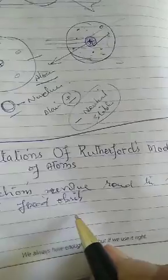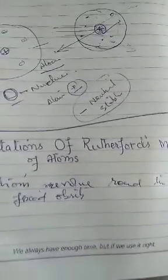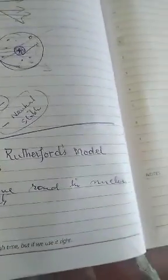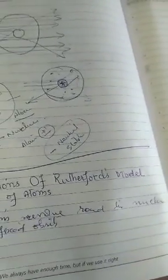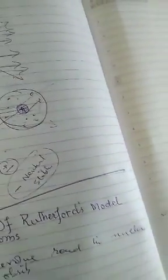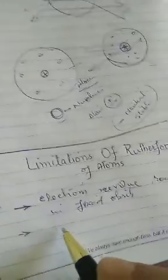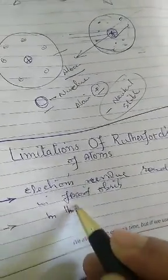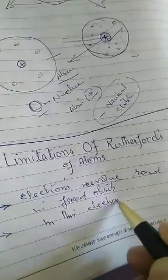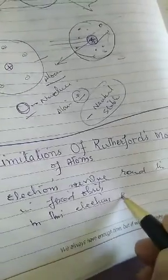But electrons move around the nucleus in fixed orbits. But the electrons while revolving in circular orbits will not be stable. In this way, electrons cannot be stable.